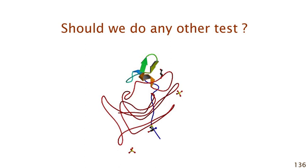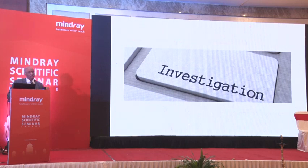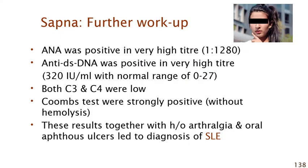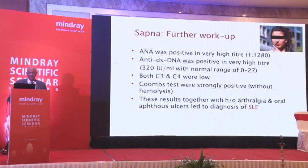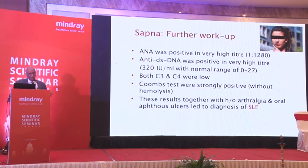The inhibitor IgG was 1:640 and IgM was 1:48. This confirms acquired von Willebrand disease. But the diagnosis isn't complete — you must search for the underlying etiology, especially in a young person. So further investigations were done: ANA was positive in very high titer (1:1280), anti-dsDNA was positive in high titer, C3 and C4 were both low, and Coombs test was strongly positive. Remember she also had arthralgia and oral aphthous ulcers.